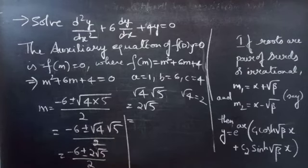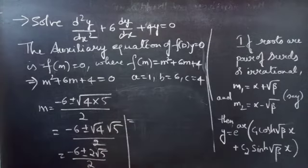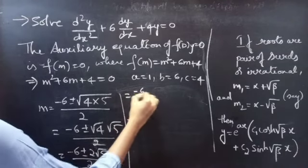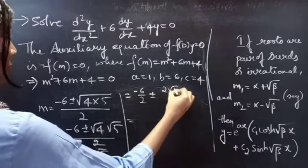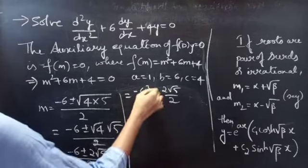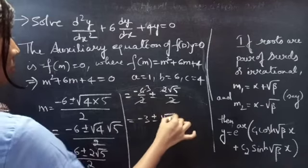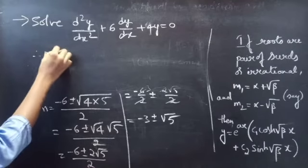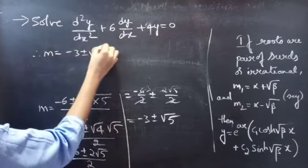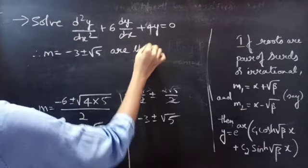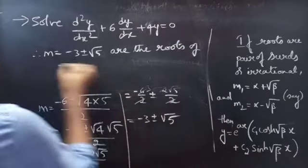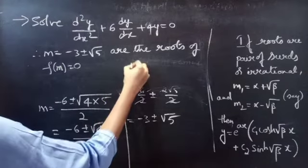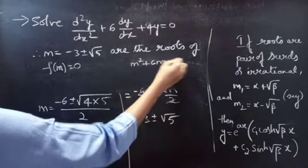Since we have two terms in the numerator and one term in the denominator, we split this into two terms: (−6/2) ± (2√5/2), which gives us −3 ± √5. Therefore m = −3 ± √5 are the roots of our auxiliary equation F(m) = 0, or equivalently m² + 6m + 4 = 0.